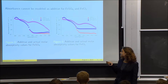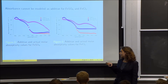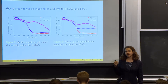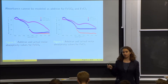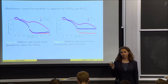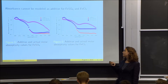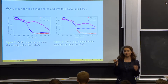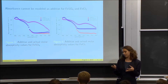As the data shows, the additive absorbance — the blue curves — map onto the red curves, which represent the absorbance for iron only. If they were truly additive, they would have mapped onto the pink curve, which is the actual measured absorbance of the compound.